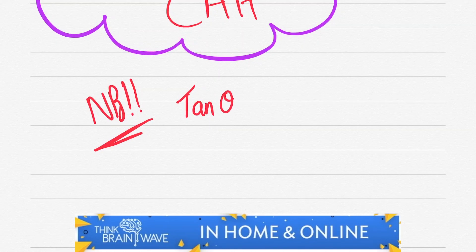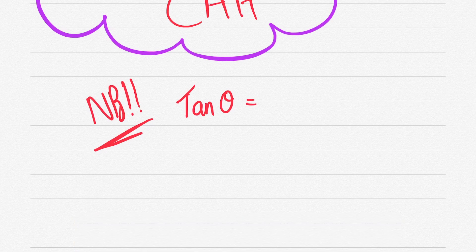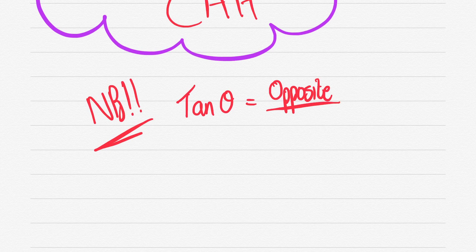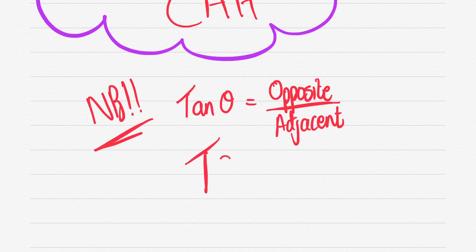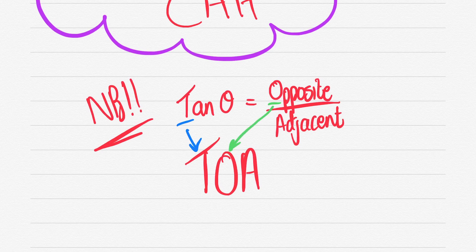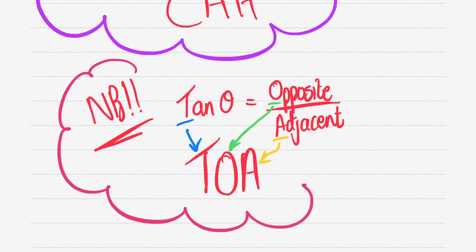Tan theta is TOA, which is opposite over adjacent. So you write tan theta equals opposite over adjacent. TOA, T-O-A, opposite over adjacent. Very, very important. You've got three of them done now. Write them down, put them on your pencil case. Don't write them where you can cheat. Just literally remember it all by heart and then write it into the test when you get there. It's a very easy way to up your marks really quickly.